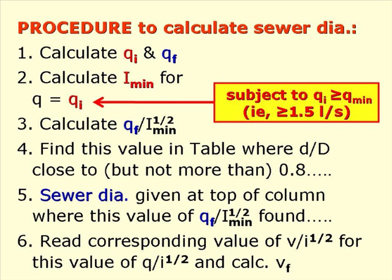The procedure to calculate the sewer diameter is as follows. First, calculate QI and QF, then calculate I min for Q equals QI, subject to QI being greater than Q min which is 1.5 litres per second. Next, calculate QF divided by I min to the power 1.5, and find this value in the table where d/D is close to but not more than 0.8. The sewer diameter is given at the top of the column where this value is found. Then read the corresponding value of V over I to the power 1.5 and calculate VF, the velocity of flow at the end of the design period.